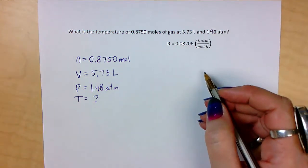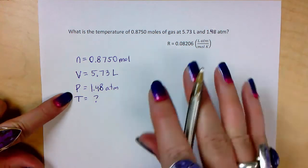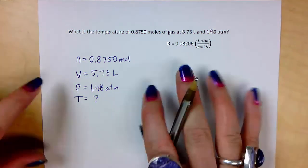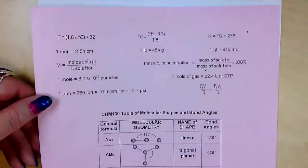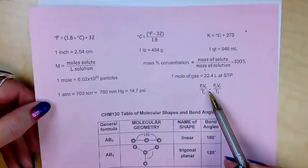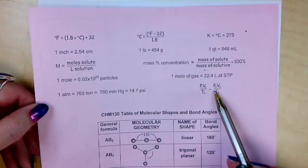So we need an equation that has n, v, p, and t in it. So we're thinking it's a gas law. The back of our periodic table has some information. It has p1, v1 over t1 equals p2, v2 over t2. But that requires a gas to be changing. Did anything change in our problem?